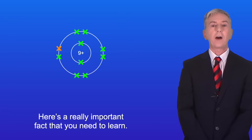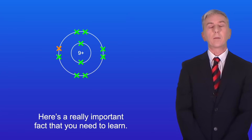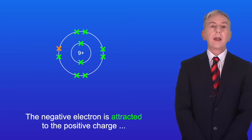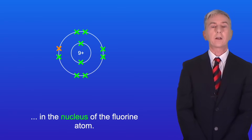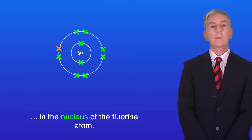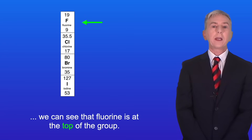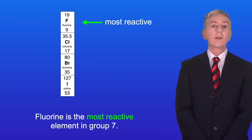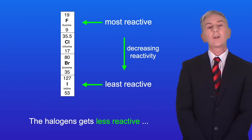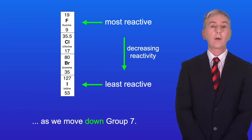Now here's a really important fact that you need to learn. The negative electron is attracted to the positive charge in the nucleus of the fluorine atom. If we look at Group 7 we can see that fluorine is at the top of the group. Fluorine is the most reactive element in Group 7 and the halogens get less reactive as we move down Group 7.